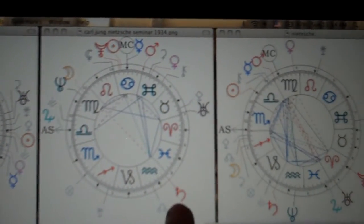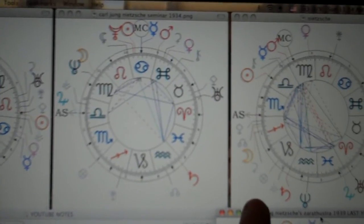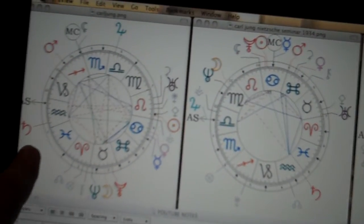What's interesting is that both Jung and Nietzsche have Saturn in Aquarius. See, that's Nietzsche, and that's Jung.